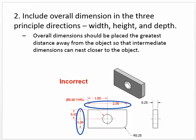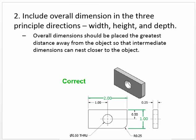Include overall dimensions in the three principal directions: width, height, and depth. This is key. Notice here they're giving you two dimensions, and if you were to add those together you'd know it's 1.5, but you don't want your reader to have to add things together to know the overall height or length of an object. These are incorrect methods. The correct methods show the overall length as 2 inches — not leaving anything up for imagination.